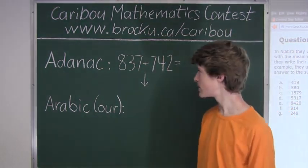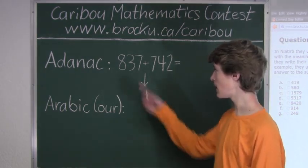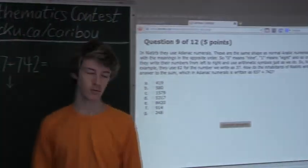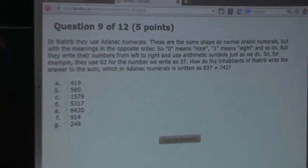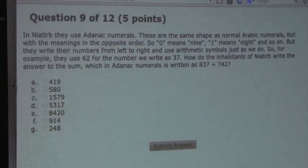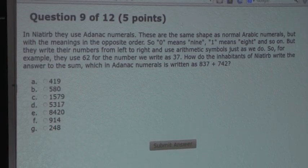Okay. So now the question is, how do you convert each numeral? Well, from the question, we can see that it says 0 means 9, 1 means 8, and so on. So that means that, well...